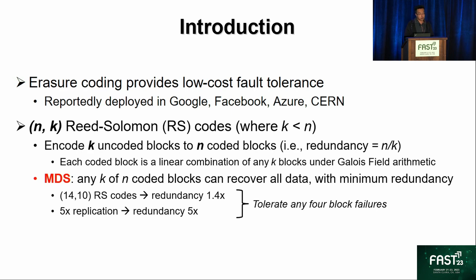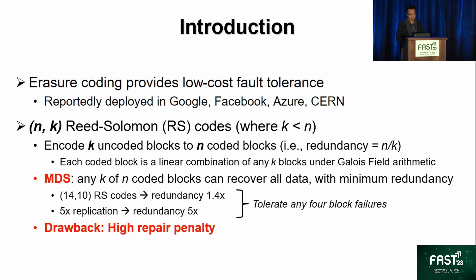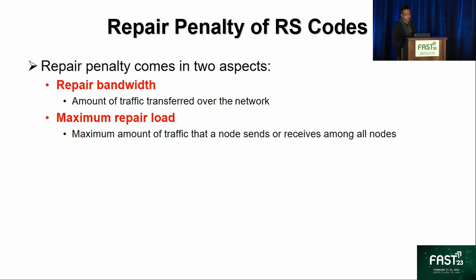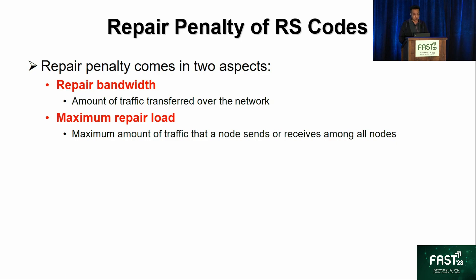Although Reed-Solomon coding is very storage efficient, the drawback is it has high repair penalty and hence incurs high performance overhead. The repair penalty comes in two parts. The first part is repair bandwidth, which is the amount of traffic transferred over the network. To restore a single lost block, we need to collect k blocks to recover it, so there is amplification in terms of traffic volume.